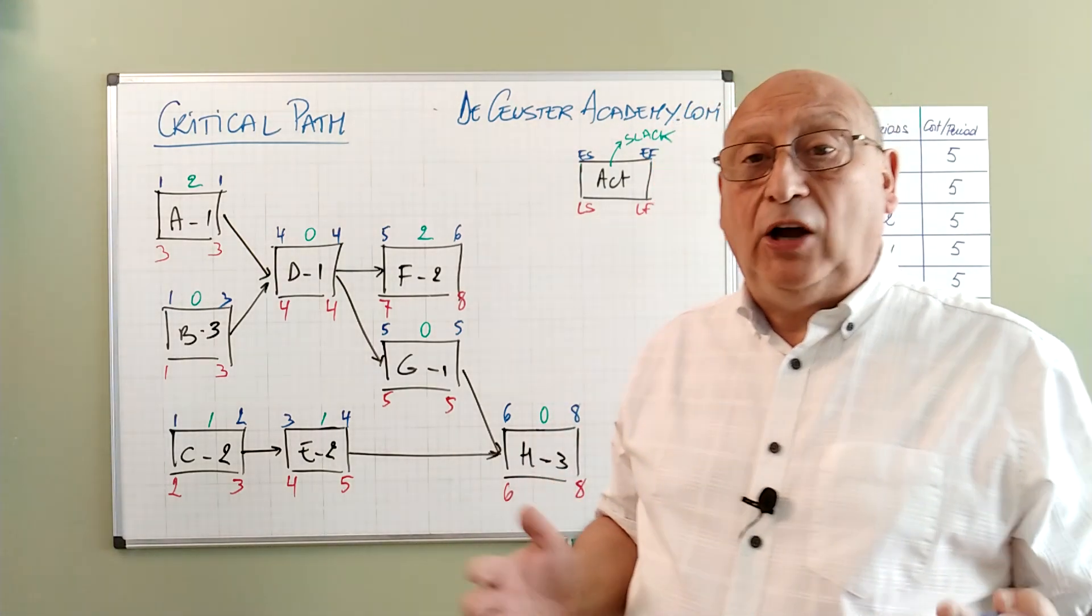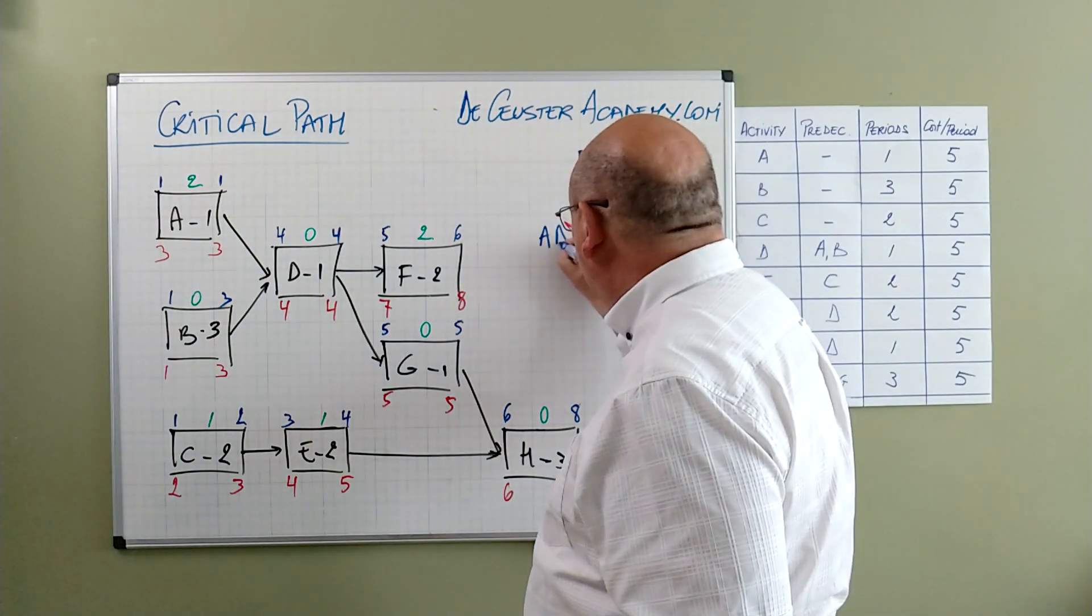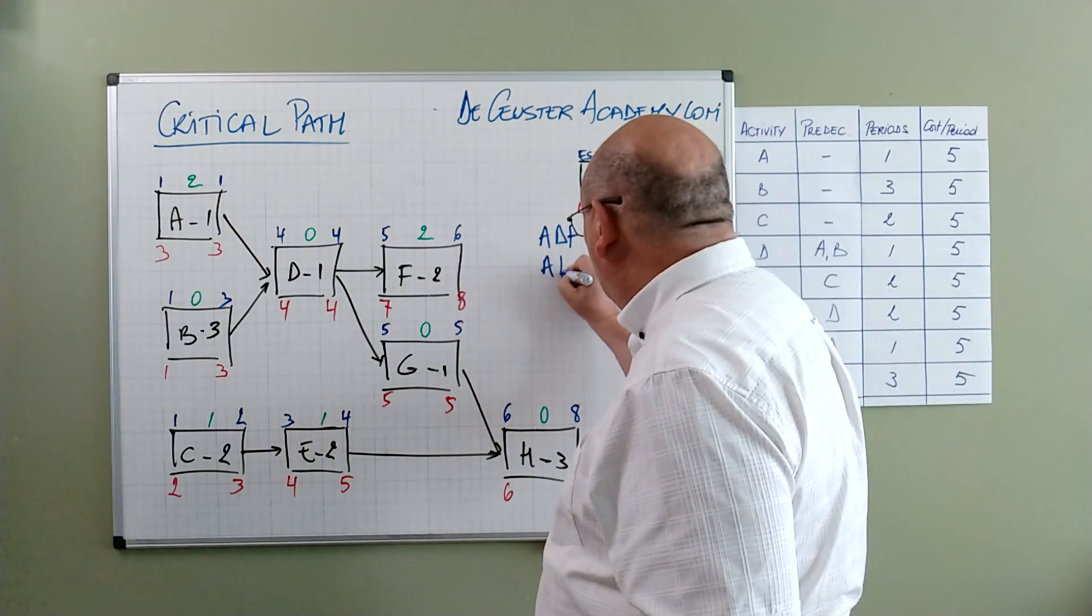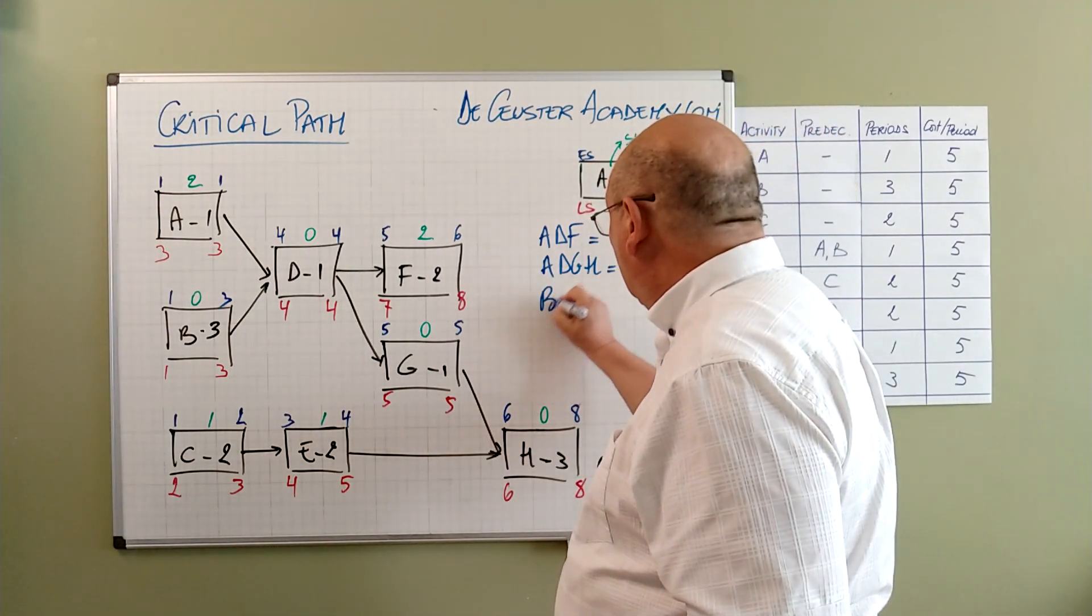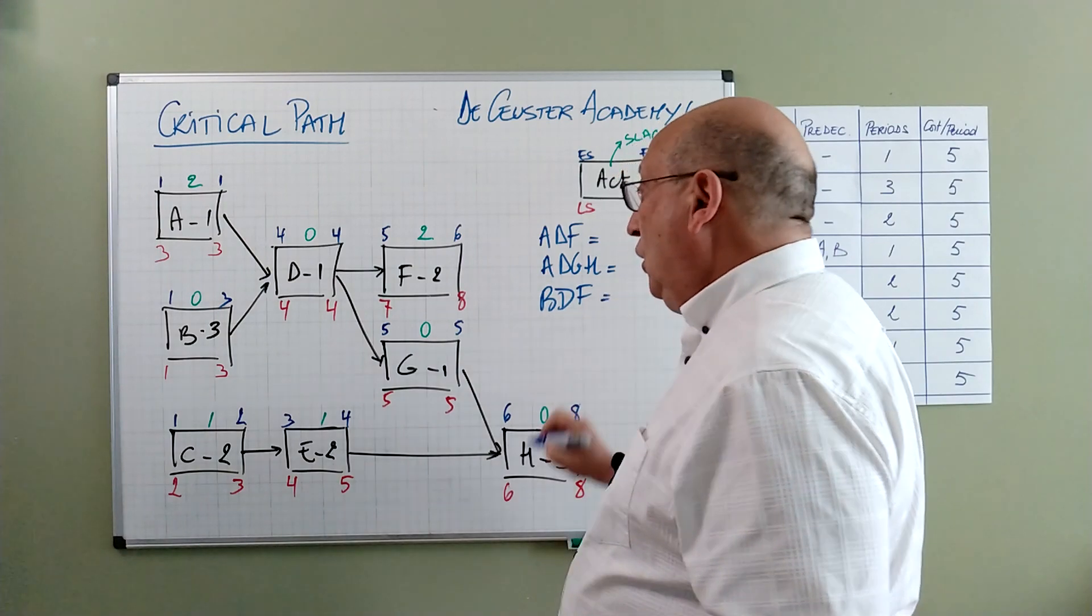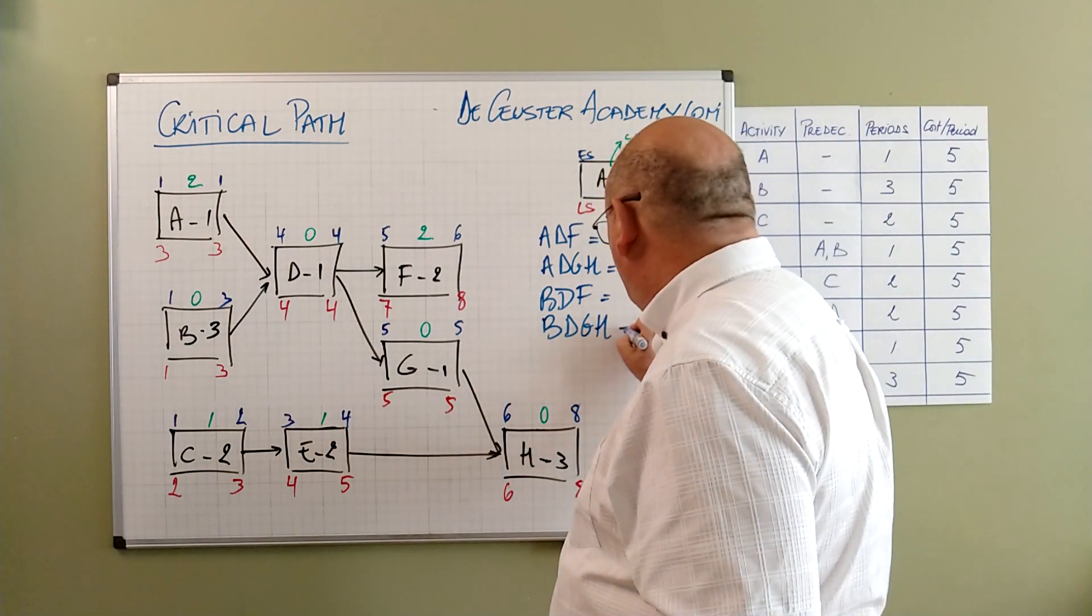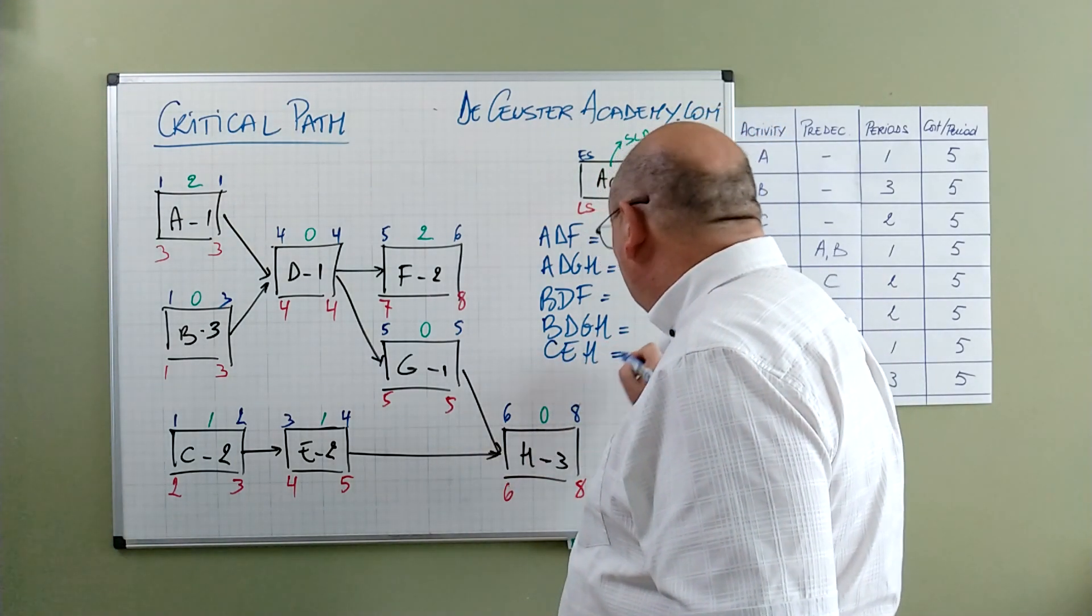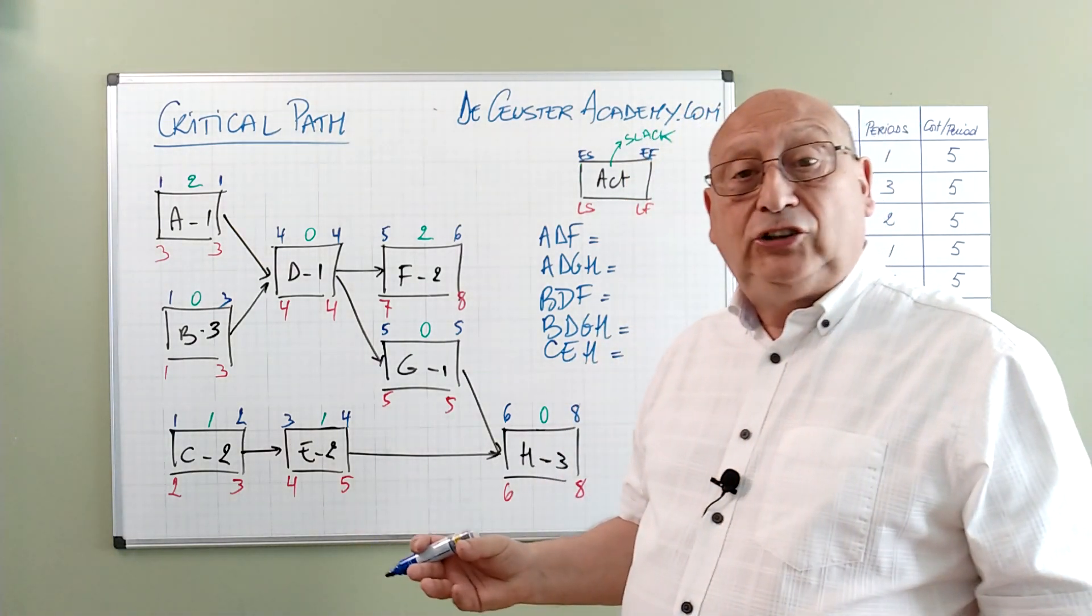First of all we identify all the paths through the network. And we have first path A D F. We have A D G H. We have B D F. We have B D G H. And we find C E H. What we now have to do is just to calculate the duration of the path.